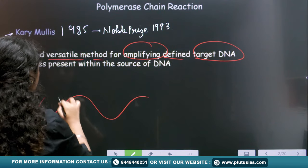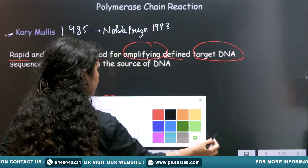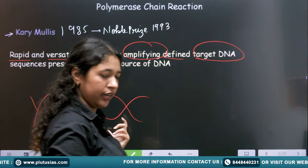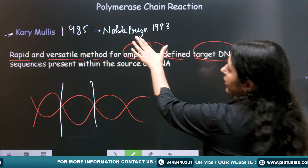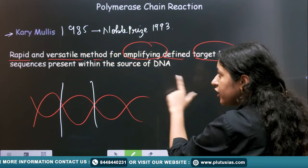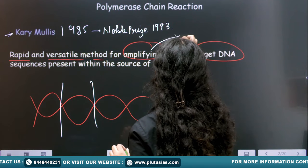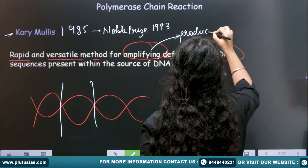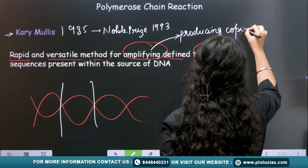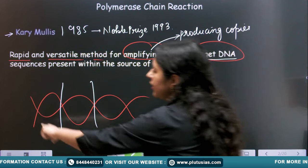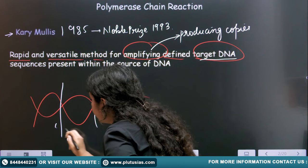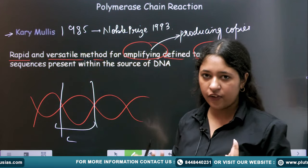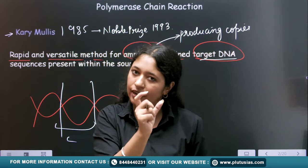PCR is a rapid and versatile method for amplifying defined target DNA sequences present within the source of DNA. For example, this is my DNA, and I wish that this particular portion is my DNA of interest — I only want copies of this particular DNA. I can achieve that by Polymerase Chain Reaction. Amplifying means producing copies of the DNA. Target DNA means the whole DNA, but I only want this much portion. Our goal is to achieve multiple copies of our target DNA.